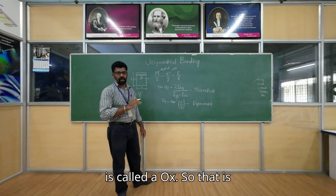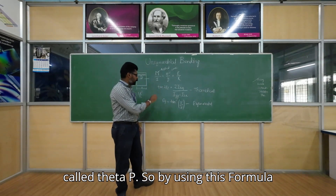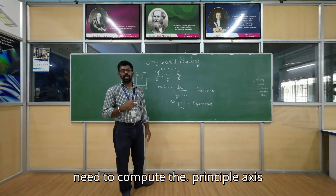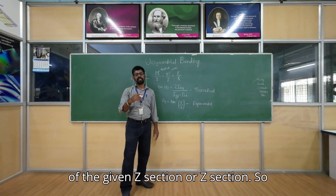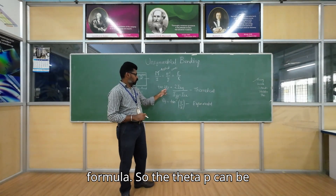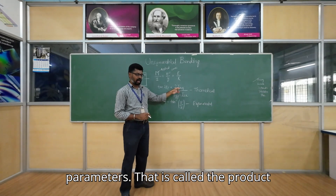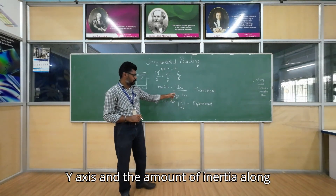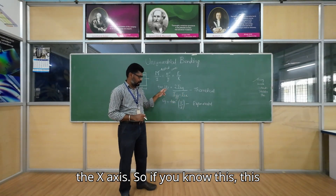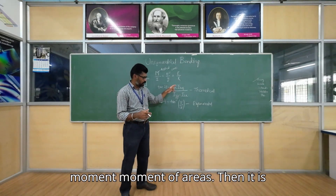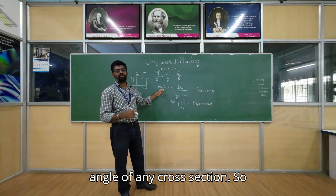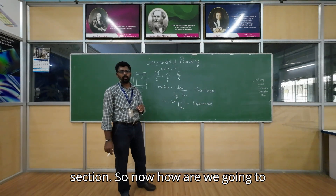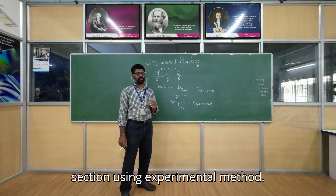Using this formula one can compute the principal axis of the beam cross section. In our case, we need to compute the principal axis of the given Z-section. Theta p can be computed based on the geometrical parameters: the product moment of inertia Ixy, the moment of inertia Iyy along the Y-axis, and Ixx along the X-axis. If you know these three second moments of area, it is possible to compute the principal angle of any cross section.